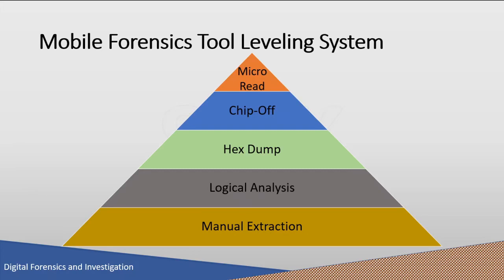The chip-off method refers to the acquisition of data directly from the device memory chip. The chip is physically removed from the device and a chip reader or second phone is used to extract data from it. This method is technically challenging as a wide variety of chip types are used in mobile phones. The process is expensive, requires hardware-level knowledge, involves de-soldering and heating memory chips, and requires training. Improper procedures may damage the memory chips.